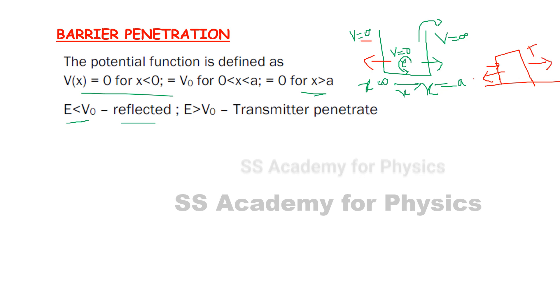There's the energy transmitted wave, the reflected wave, and the incident wave. This is position one, position two, and position three. When energy is less than V₀, it is reflected. When energy is greater than V₀, it is transmitted and penetrates. This is very important.